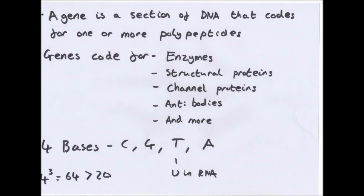Now the DNA code consists of four bases: cytosine, guanine, thymine and adenine, except thymine is replaced by uracil in RNA.